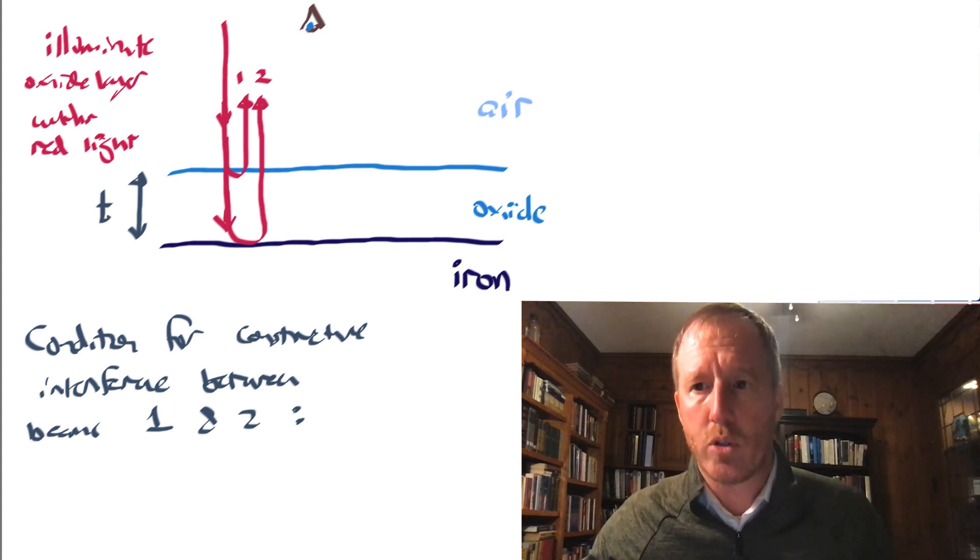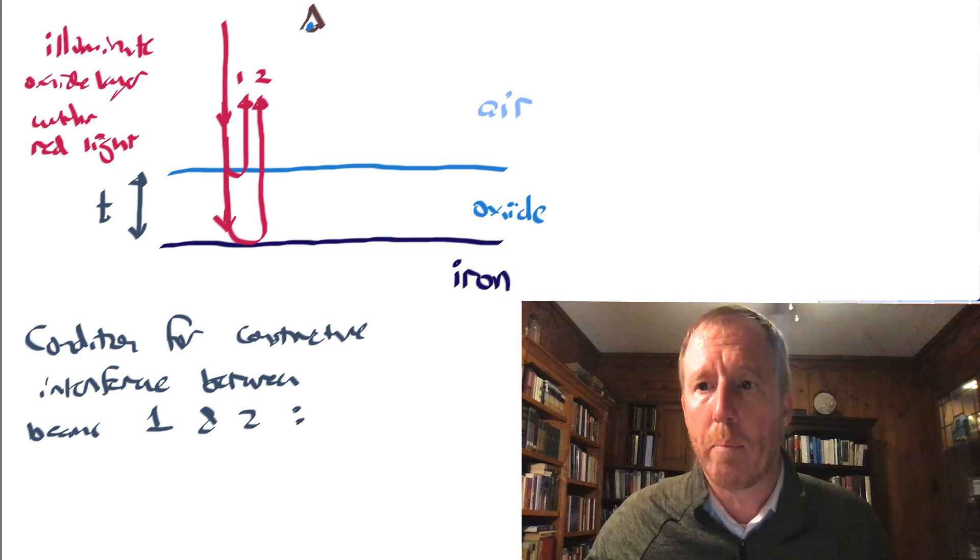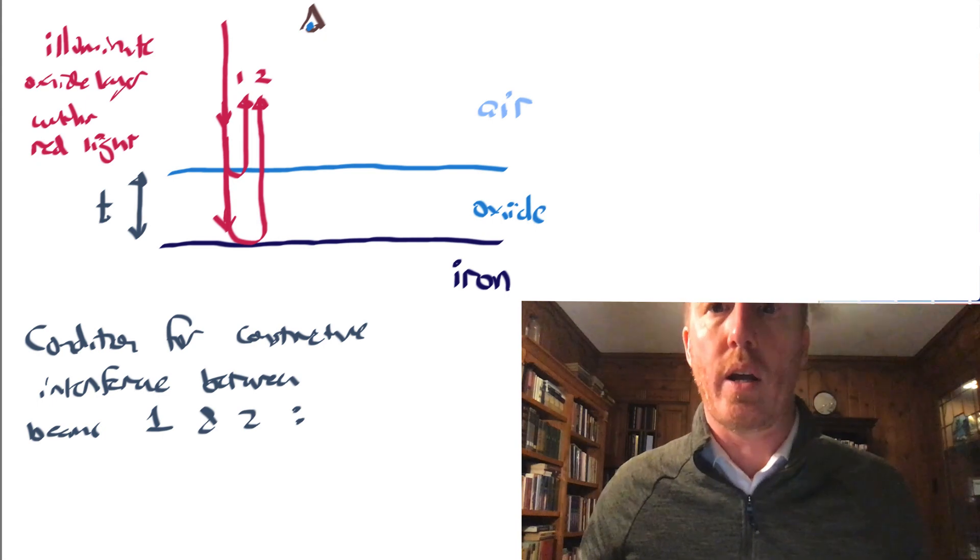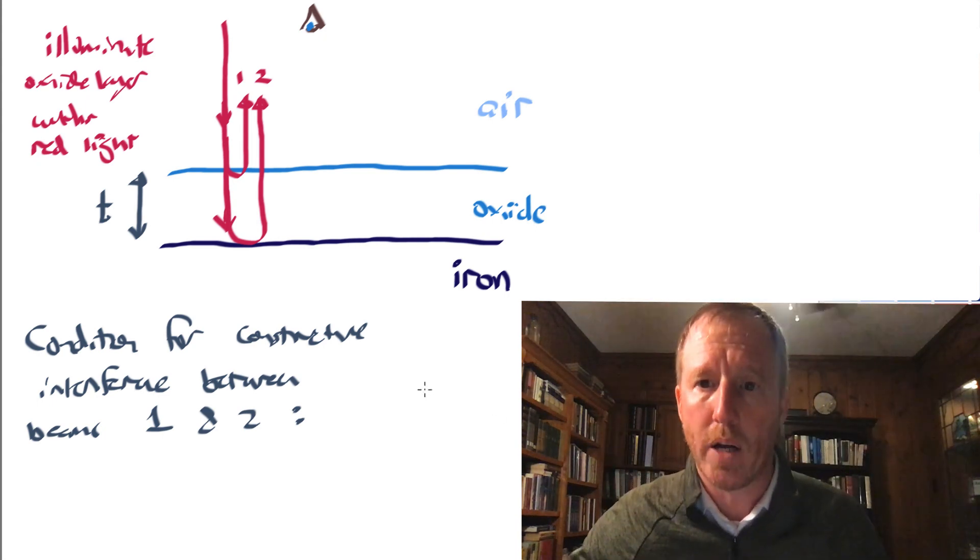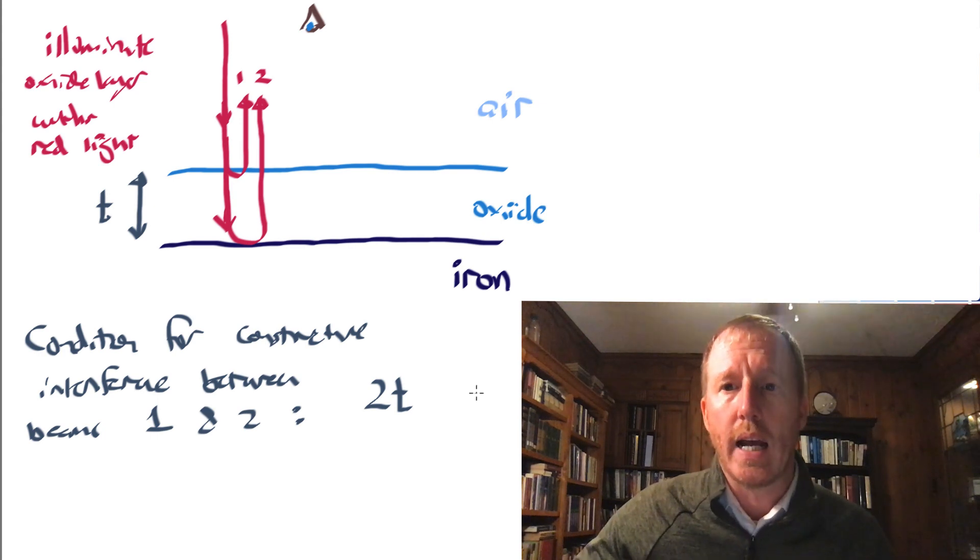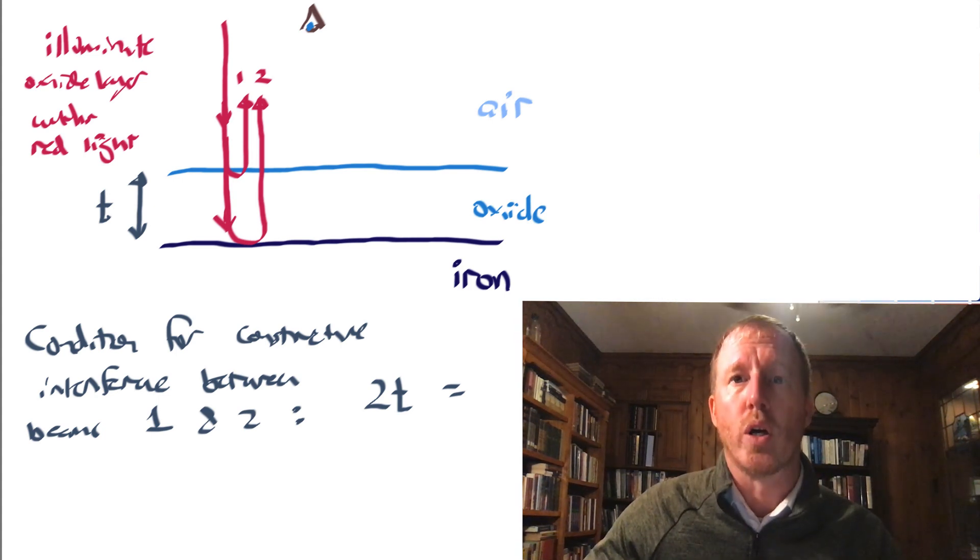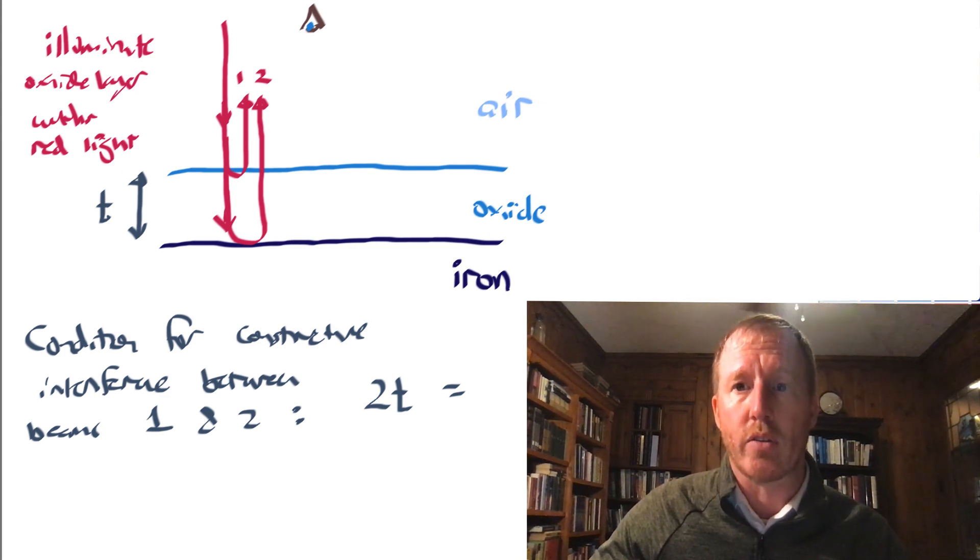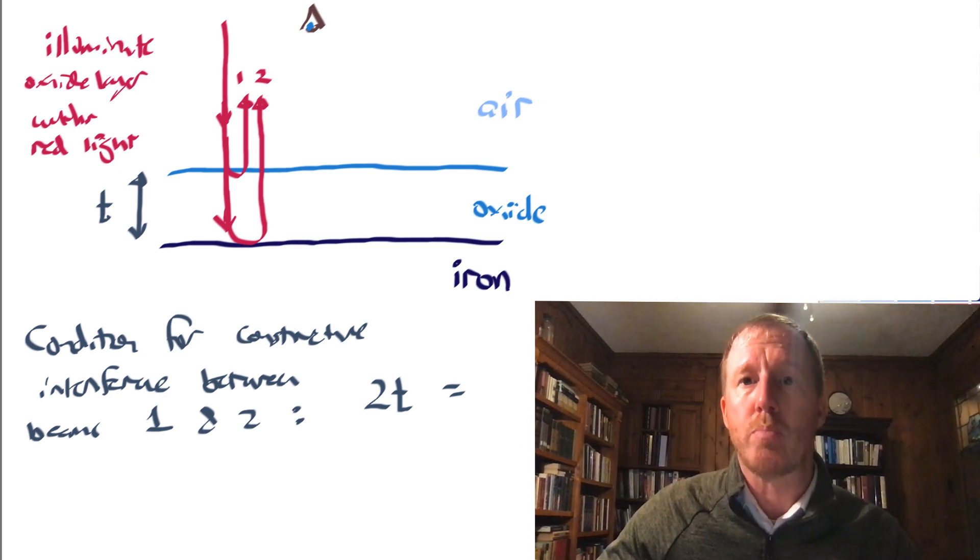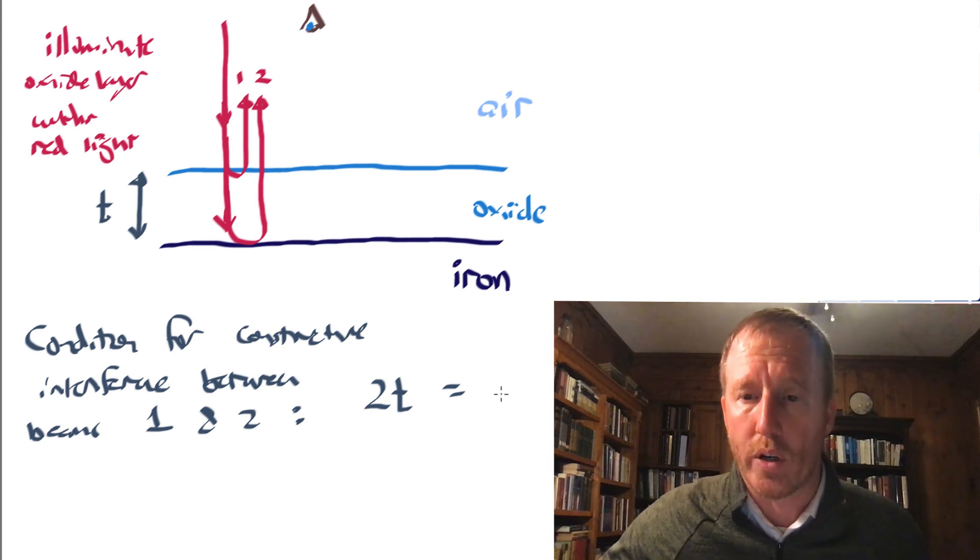Well, you can probably see that beam two travels an extra distance compared to beam one. How much extra distance does it travel? Well, that would be twice the thickness of the film because it has to go down, bounce off the iron and come back up. So the extra distance would be 2T. And the condition for constructive interference would be if that extra distance is just enough to accommodate either one wavelength or two wavelengths or three wavelengths so that when it comes out and it meets beam one, they will be exactly in phase with one another.